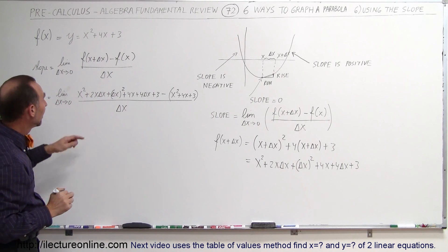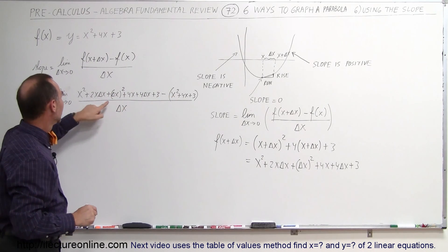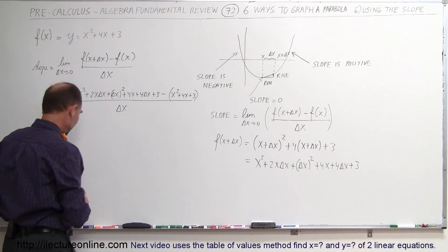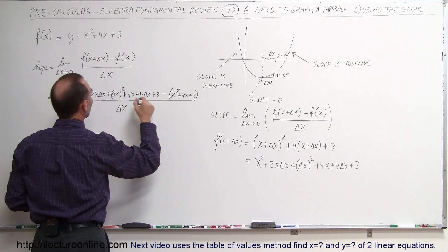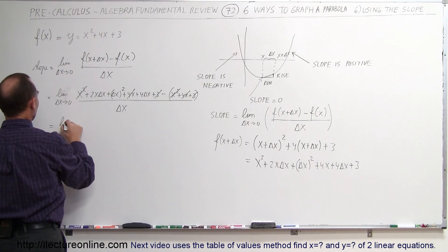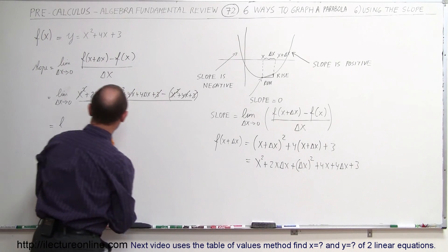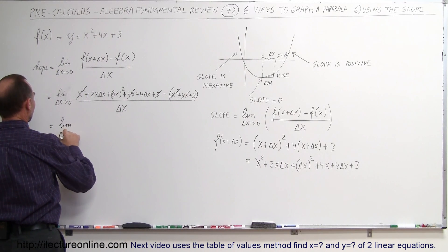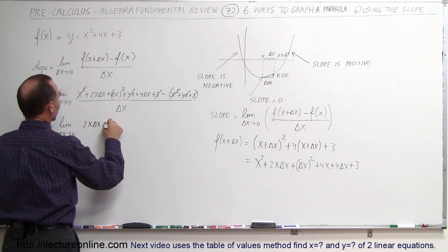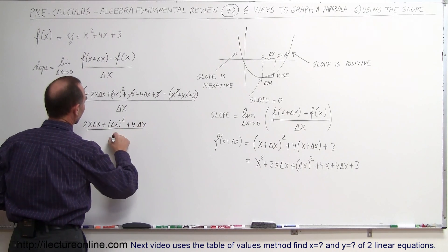You can see that x squared cancels with x squared, 4x cancels with 4x, and 3 cancels with 3. So this simplifies to the limit as delta x goes to 0 of 2x delta x plus delta x squared plus 4 delta x, all divided by delta x.